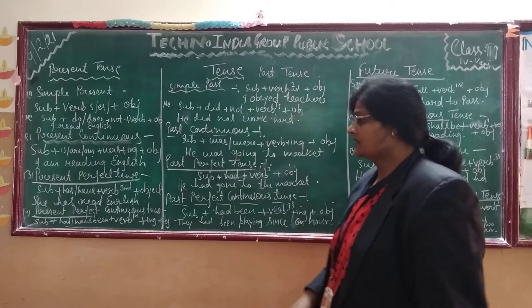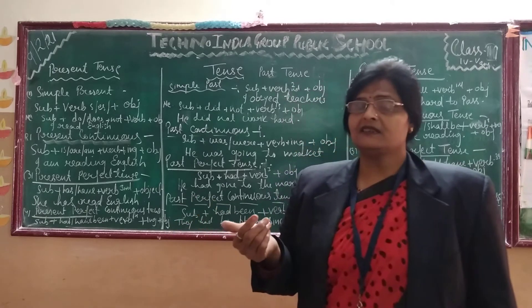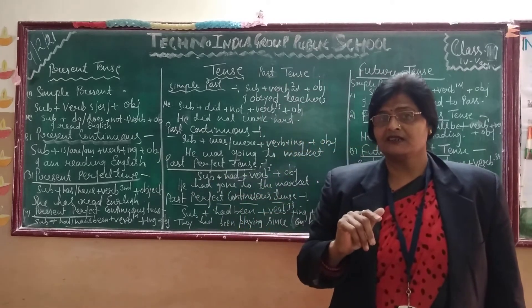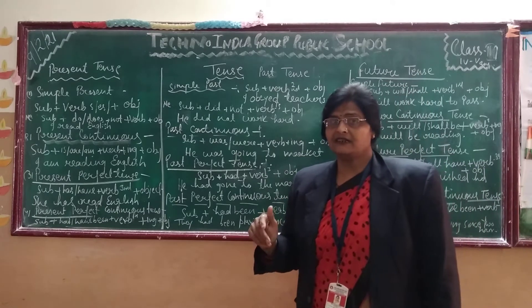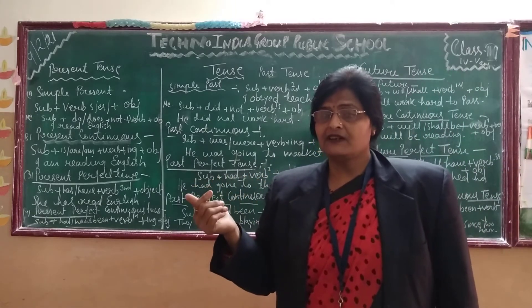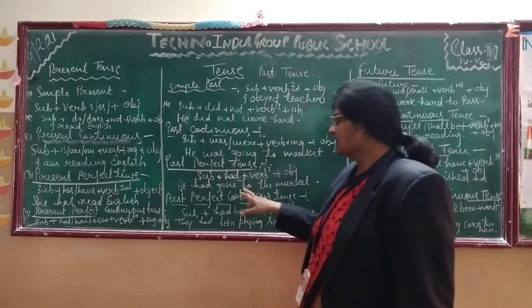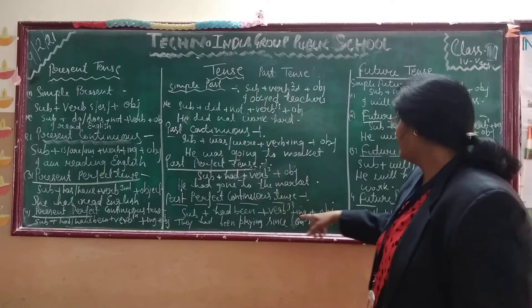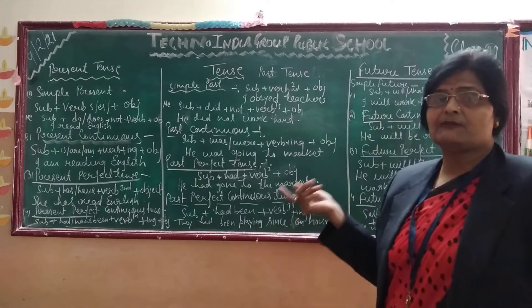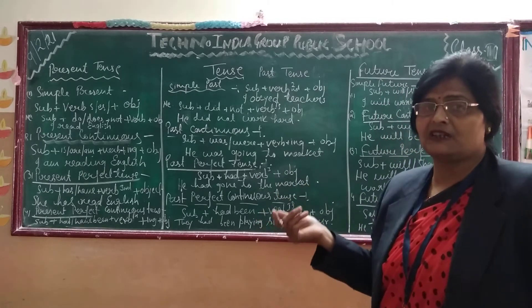For example: he has completed his work — this is present perfect tense. In past perfect tense: he had completed his work. In future perfect tense: he will have completed his work. So in present perfect we use has/have, in past perfect we use had, and in future perfect we use will have or shall have — always with the third form of the verb.